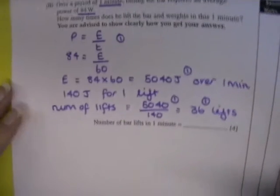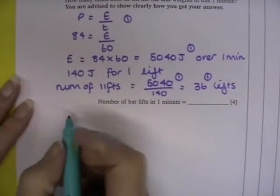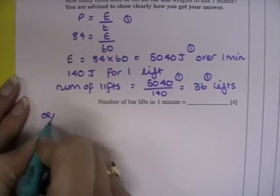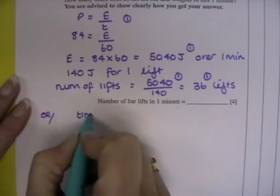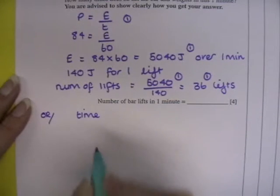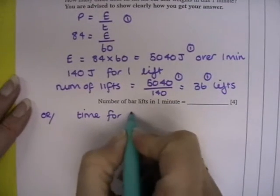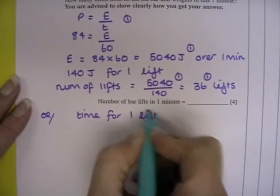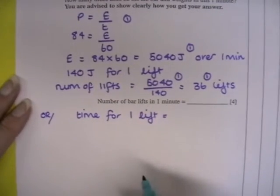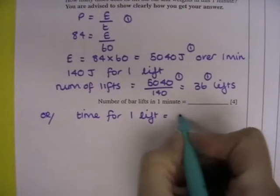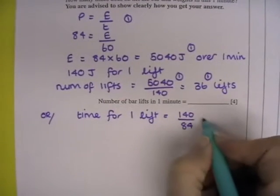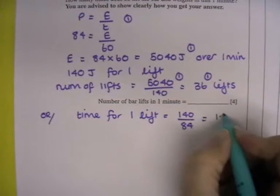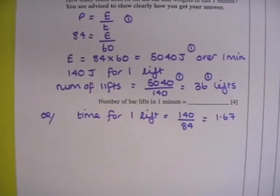We said there was another method. And what you could do, the second method, is you could work out the time. He's lifting weights for a minute. So how long does it take him for one lift? And to do that, we use 140 joules per lift. 84 watts gives us 1.67 seconds for one lift.